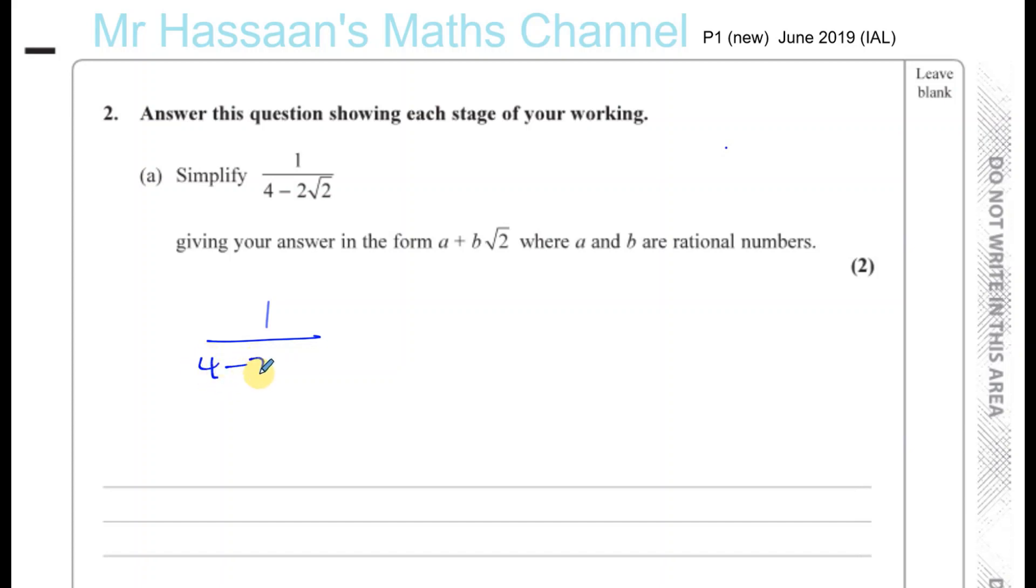So 4 minus 2√2, its conjugate, or what will get rid of the square root, is basically the same numbers with the opposite sign between them. So 4 plus 2√2 would be the conjugate. But if you multiply the denominator of a fraction by something, you must multiply the numerator by exactly the same thing so we don't change the value of that fraction.